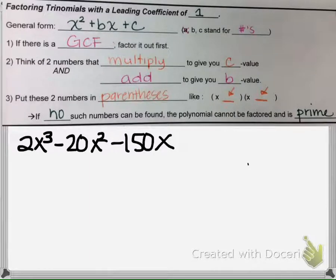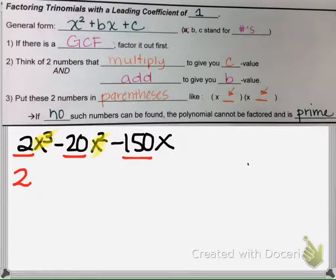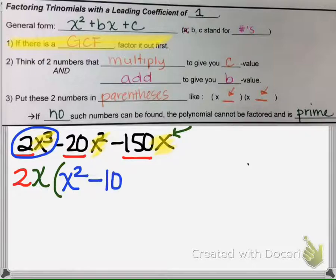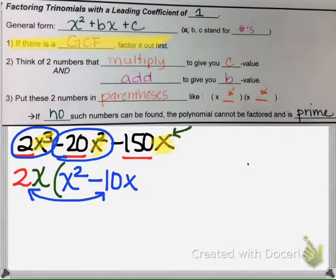For the next example, we check for a GCF. All three terms are even and have X's, so 2x can be factored out. That gives us: 2x times x² for the first term, 2x times negative 10x for the second term, giving negative 20x², and 2 times negative 75 for the constant term.